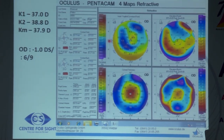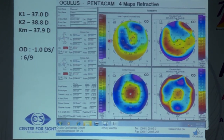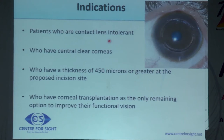Intacs are a very important adjunct, especially in cases of post-LASIK ectasia where cross-linking alone is sometimes not as efficacious as it would be in keratoconus.